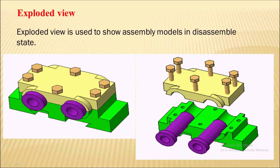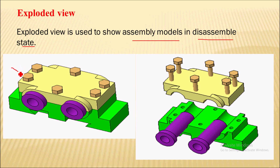Next is the exploded view. An exploded view is used to show assembly models in a disassembled state — an assembly can be shown in a disassembled state by means of an exploded view.